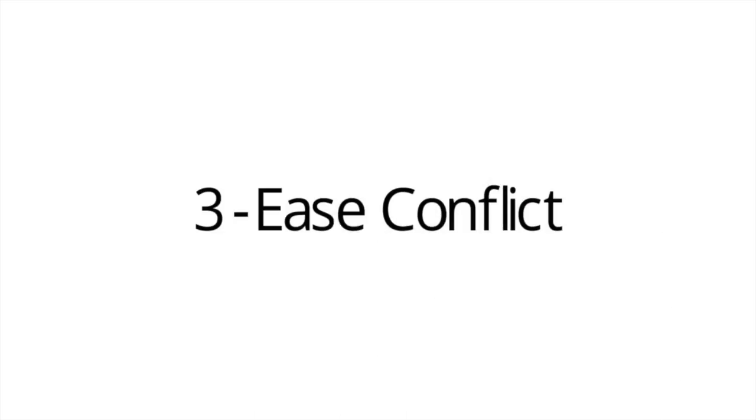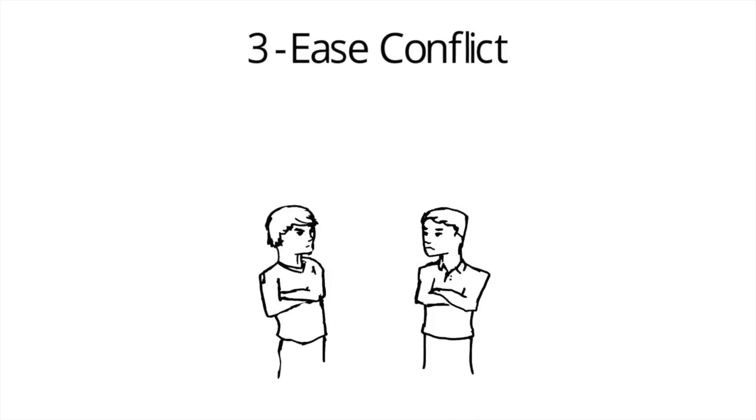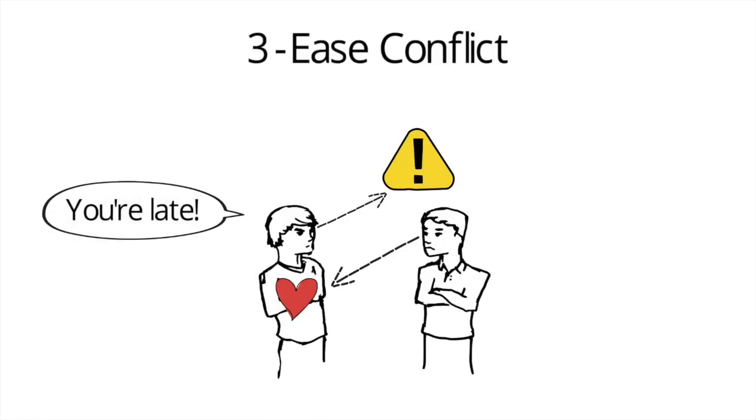Third, ease conflict. When there's a problem, keep one eye on the issue and your other eye on the relationship. Being too blunt may shame people.